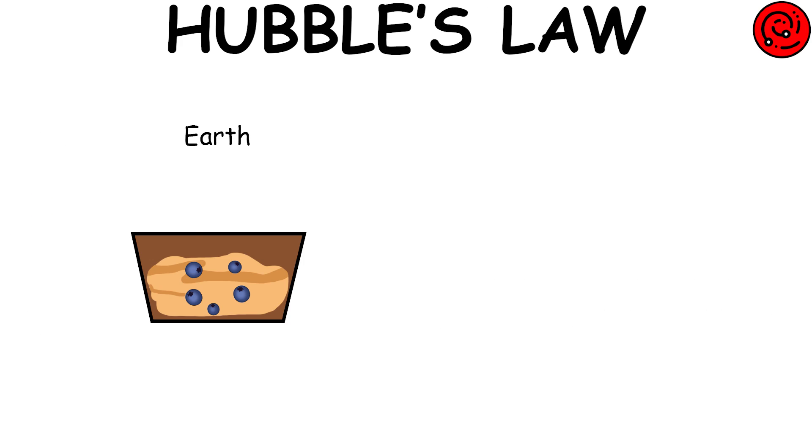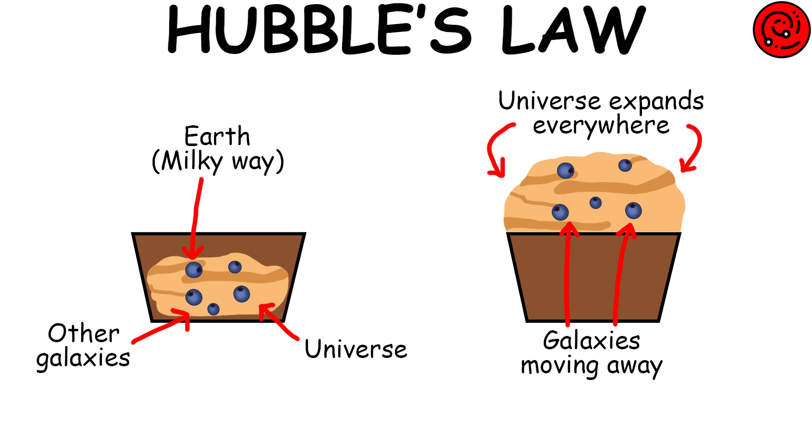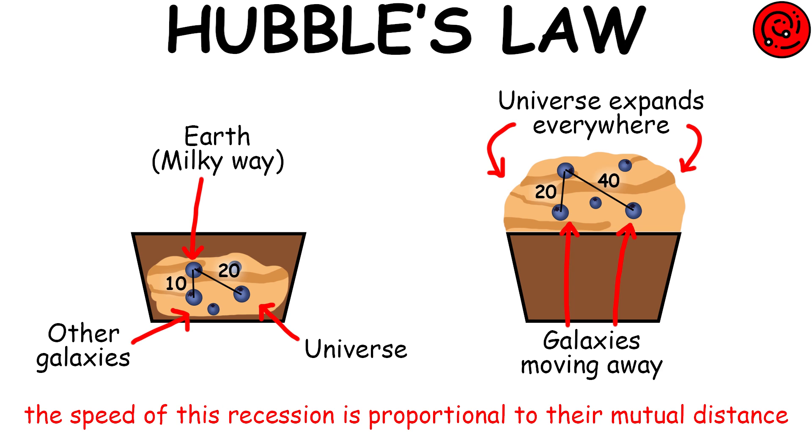Hubble's Law: Earth is located in a galaxy called the Milky Way and is surrounded by numerous other galaxies in the universe. Hubble's Law states that galaxies are moving away from each other, and the speed of this recession is proportional to their mutual distance.